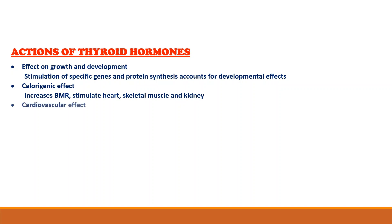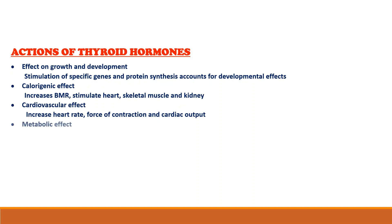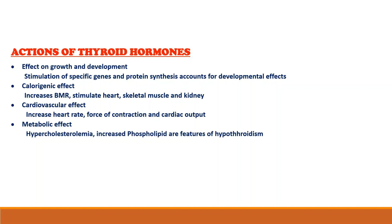Secondly, the calorogenic effect: thyroid hormones increase the basal metabolic rate. The heart, skeletal muscle, liver, and kidney are markedly stimulated by thyroxine, while brain, spleen, and gonads are unaffected. Cardiovascular effects include increased heart rate, force of contraction, and cardiac output. These effects are due to an increased number of myocardial beta-adrenergic receptors as well as hypersensitivity towards circulating catecholamines.